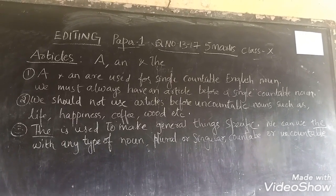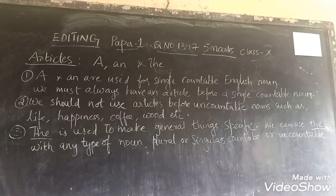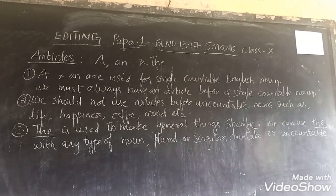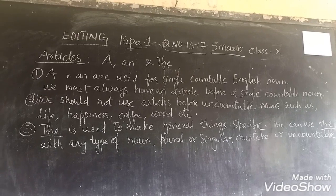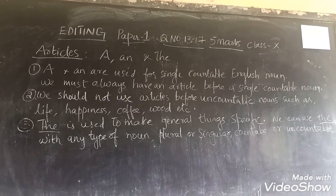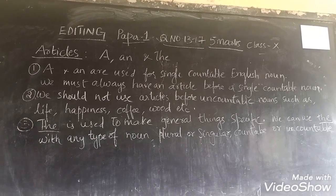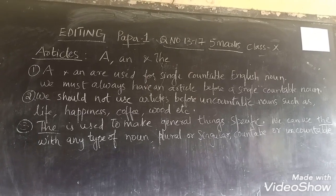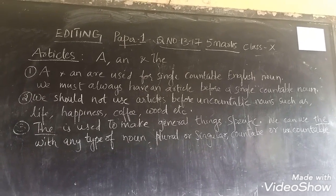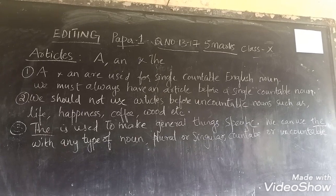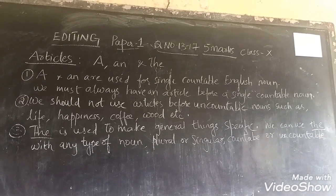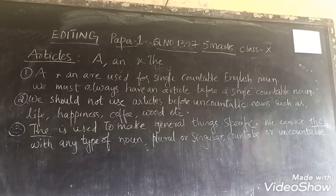And there are some words which don't carry any article at all. In pages 54 to 57 of your class 10 English reader, you can observe where articles are not used. So this is about articles.